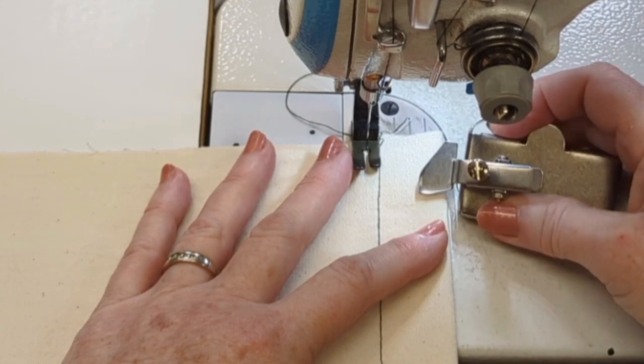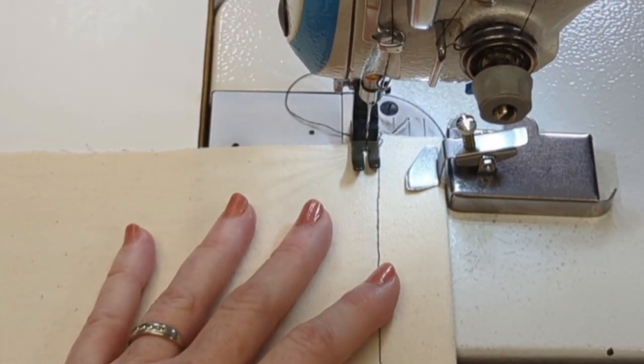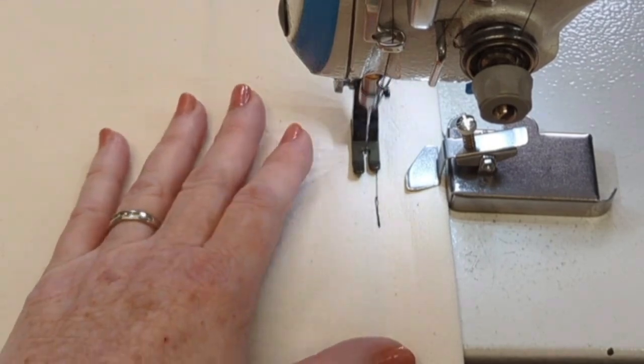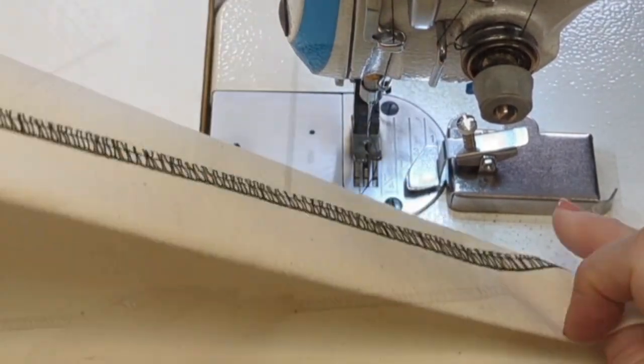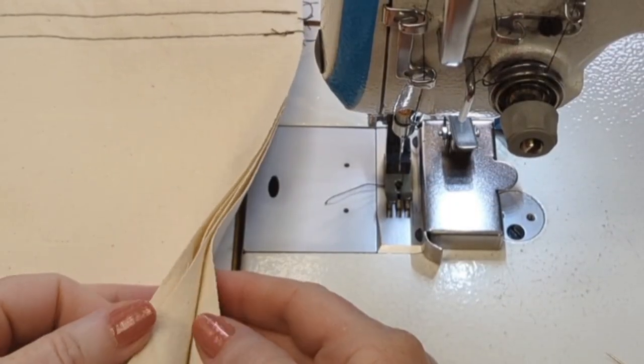Now I'm just going to do a parallel line of sewing, catching that edge of the serging underneath to give me that faux flat lock look, and I just moved out the magnet slightly, and look at how lovely that is.